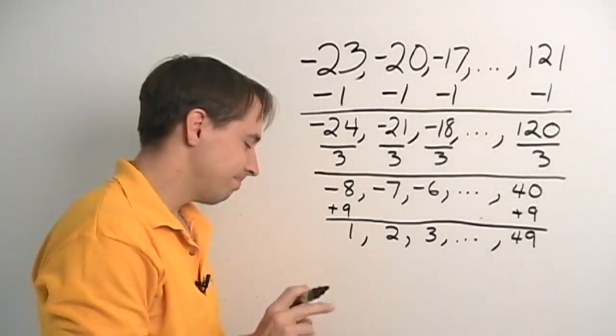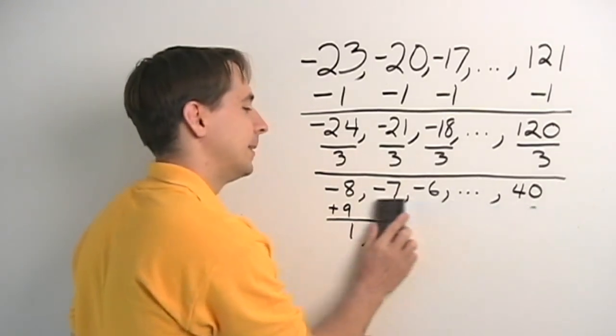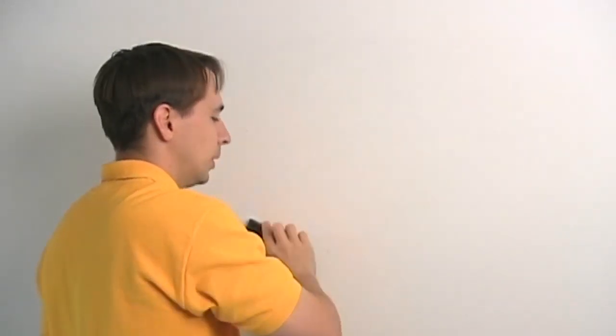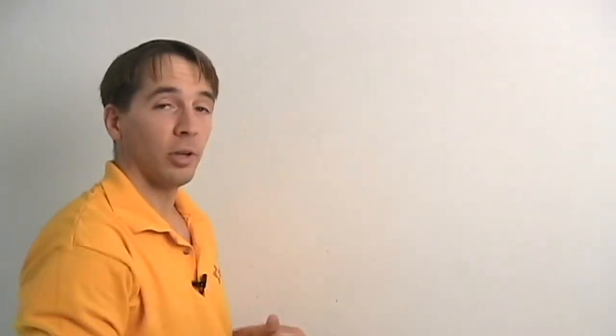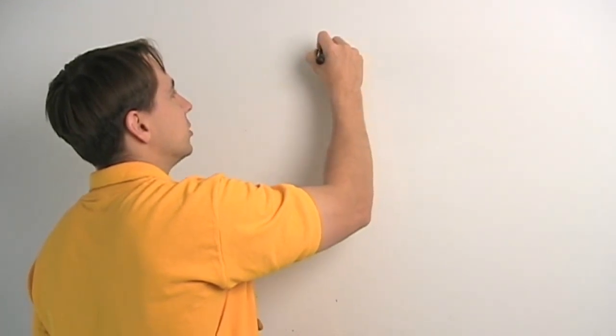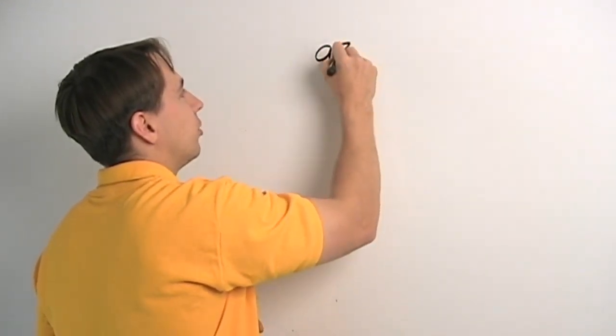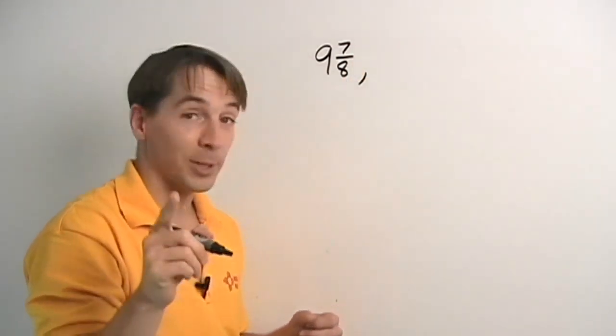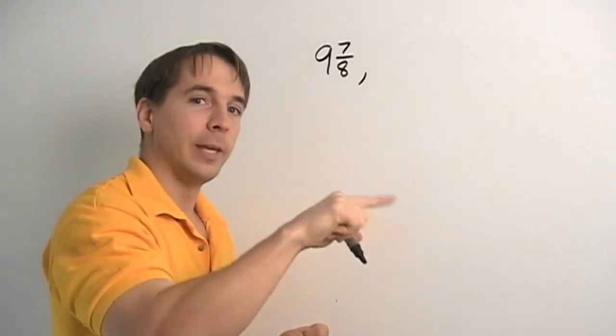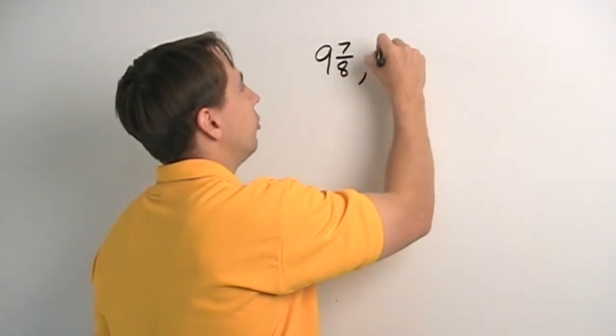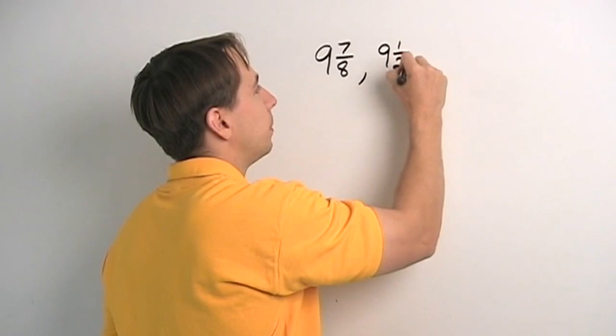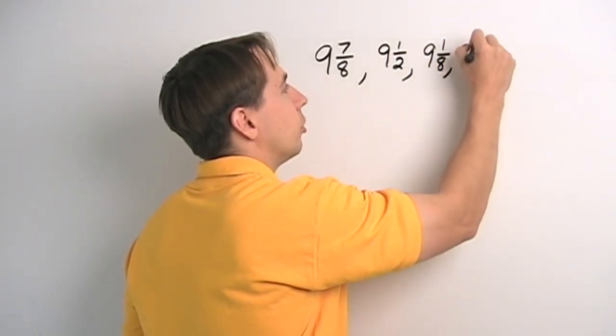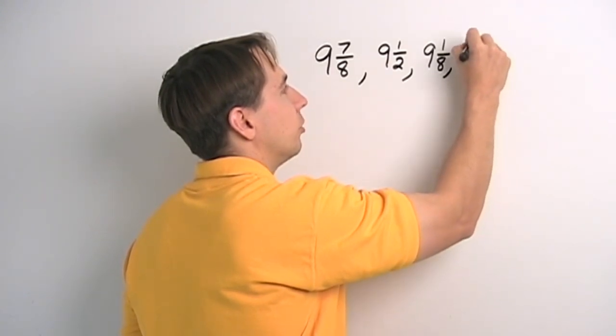But unfortunately, sometimes we have to. And I'm going to make you deal with fractions right now. So imagine we start with 9 and 7/8. No getting around this fraction. We're going to start with 9 and 7/8. And instead of changing by a whole number each time, you guessed it, we're going to change by a fractional part. Not only that, we're going to go down instead of going up. So this seems like a completely different kind of problem. Or is it?